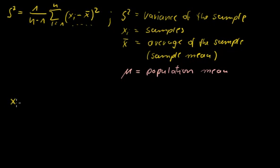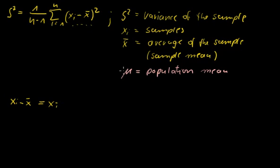We start with this expression here. And here comes the first trick: if you add something to an equation and subtract the same thing, you do not change the equation. Because we have a goal here, we take the population mean and add and subtract it. So we subtract it and add it, and we still have minus the average of the sample. That's the first step.